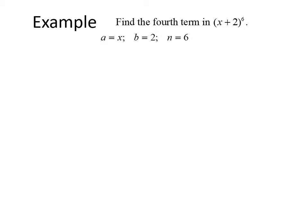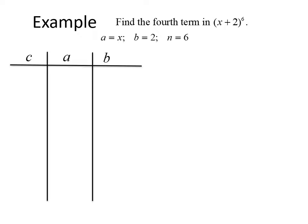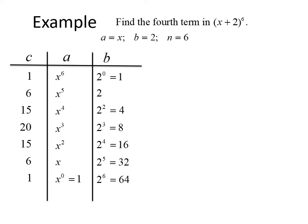Let's do another example — this time we're going to change it up a little bit. The problem asks us to find the 4th term in the expansion of (x + 2) raised to the sixth power. Our first term a is equal to x, the second term b is equal to 2, and our power is 6. We create our table as before; the coefficients come from the row in Pascal's triangle that has 6 in the second position: 1, 6, 15, 20, 15, 6, and 1. Our first term x starts with a full power of 6 and each term reduces by 1. For our b terms, 2 starts with a power of 0 and increases: 2 to the zero is 1, then 2, 2 squared is 4, 2 cubed is 8, and so on.